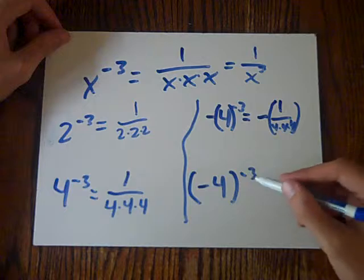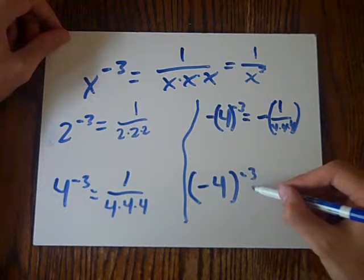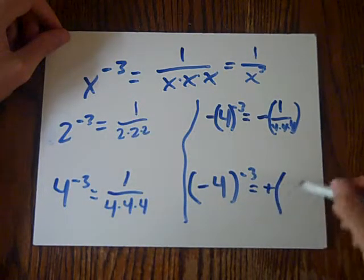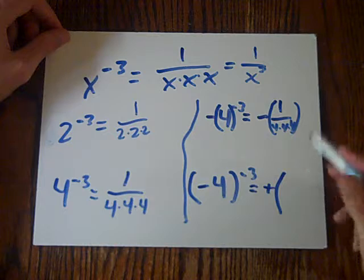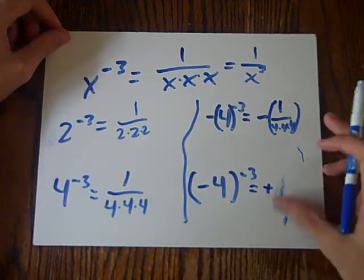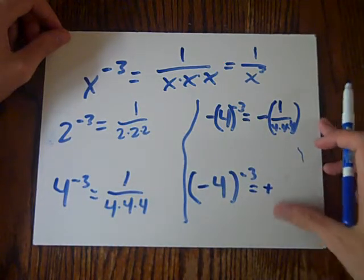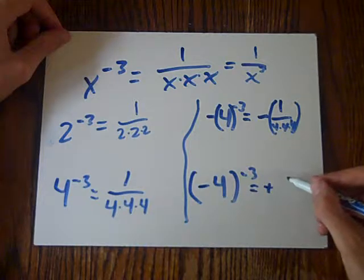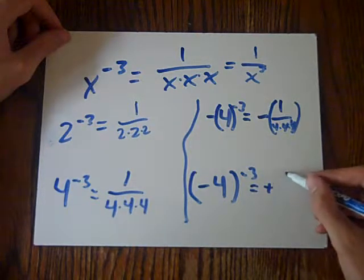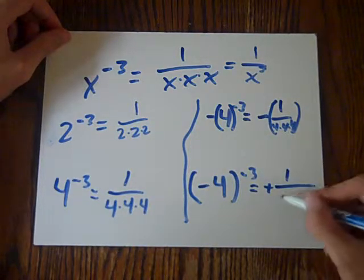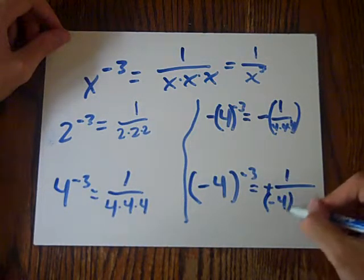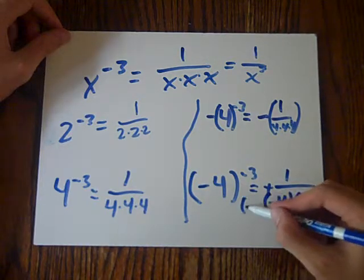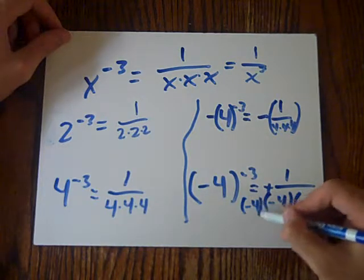And this, however, is a positive sign outside the parenthesis, or no parenthesis at all since we don't need to. And it'll be 1 over negative 4 times negative 4 times negative 4.